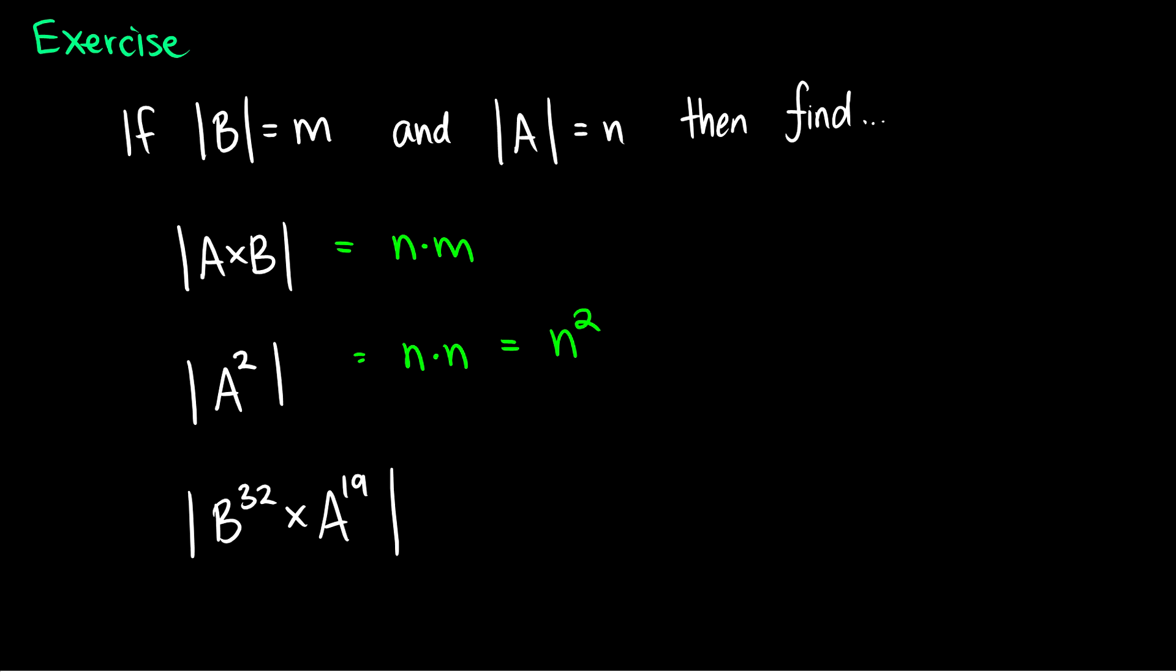So now we can do something really ridiculous, which is what some discrete math professors love to do, and I don't know why, but I guess it's kind of exciting. They can say, well, what is B³² cross A¹⁹? Well, okay, so if we look at A squared is just N squared. Then B to the 32 is going to be M to the 32, and A to the 19 is going to be N to the 19. So that's how big B to the 32 cross A to the 19 is.